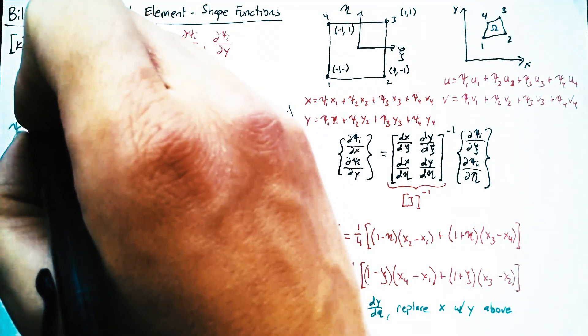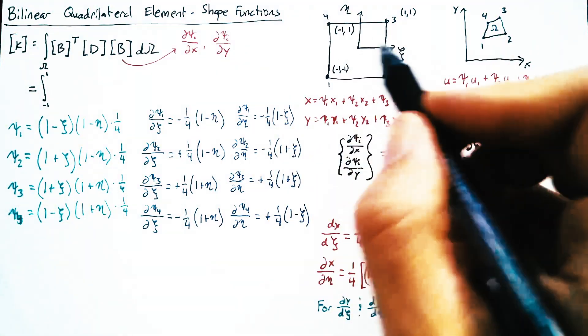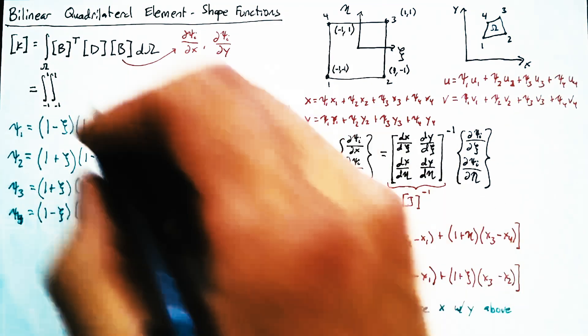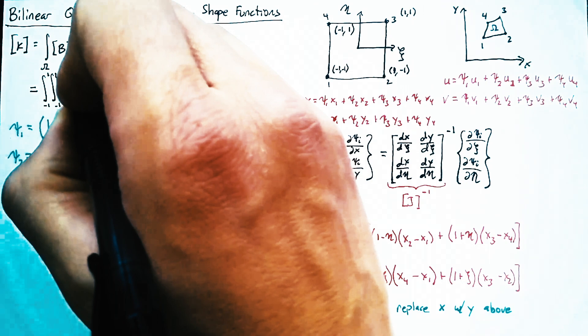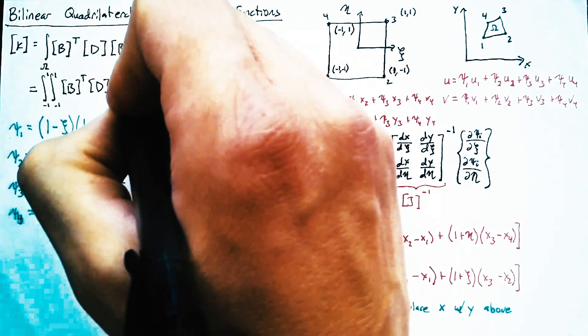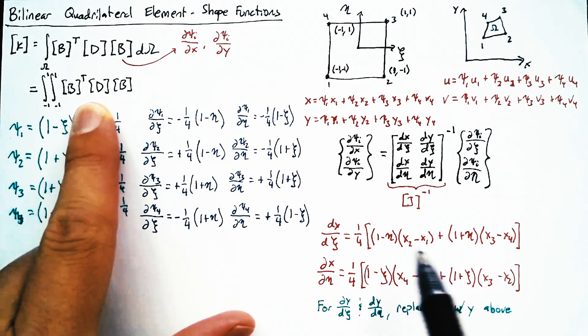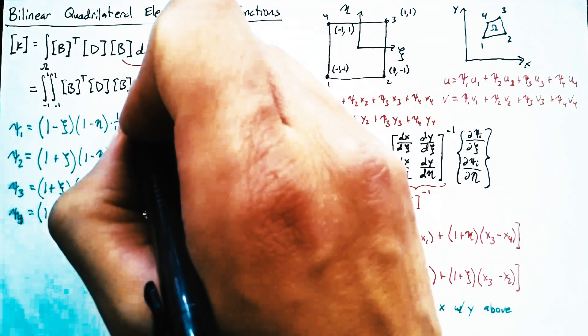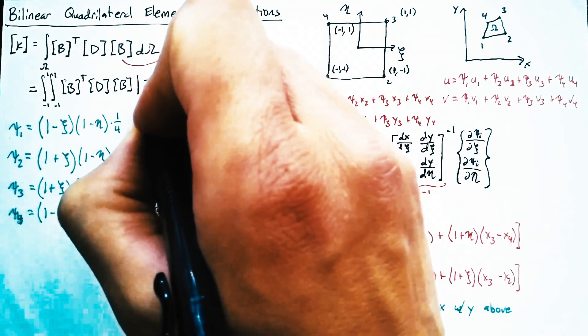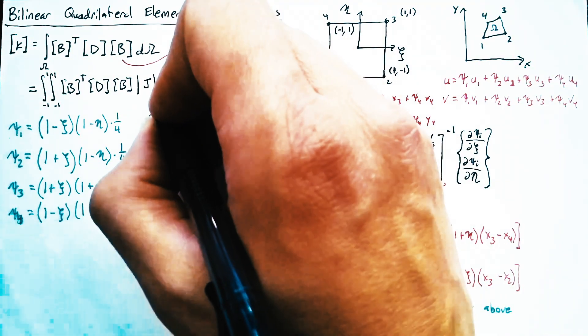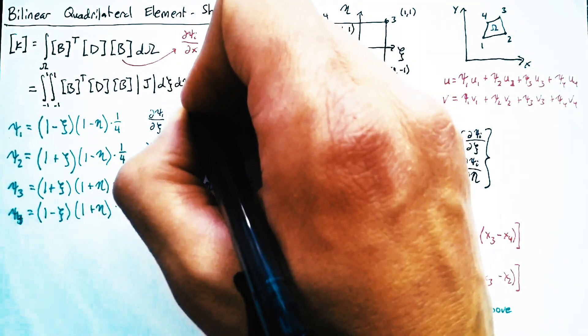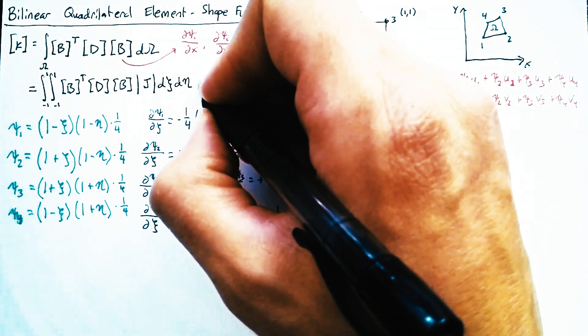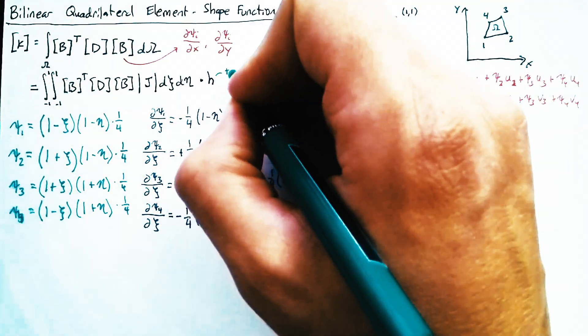We're going to integrate over our area in xi eta space. So that's from negative 1 to 1 in both xi and eta. And we're still going to have that B transpose DB, which we can define as functions of xi and eta. But then, because we've transformed this, we need to multiply by the determinant of our Jacobian. And then we can safely say that this is the integral over xi and eta. And of course, we do need to multiply this by h, the thickness of our element.